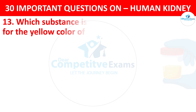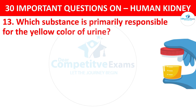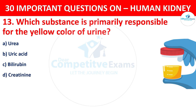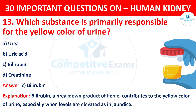Question 13. Which substance is primarily responsible for the yellow color of urine? The options are: Urea, Uric Acid, Bilirubin, or Creatinine. The correct answer is C, i.e. Bilirubin. Bilirubin, a breakdown product of heme, contributes to the yellow color of urine, especially when levels are elevated as in jaundice.